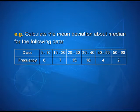Calculate the mean deviation about median for the following data. We have classes ranging from 0 to 10, 10 to 20, 20 to 30, 30 to 40, 40 to 50, and 50 to 60. The corresponding frequencies are 6, 7, 15, 16, 4, and 2.